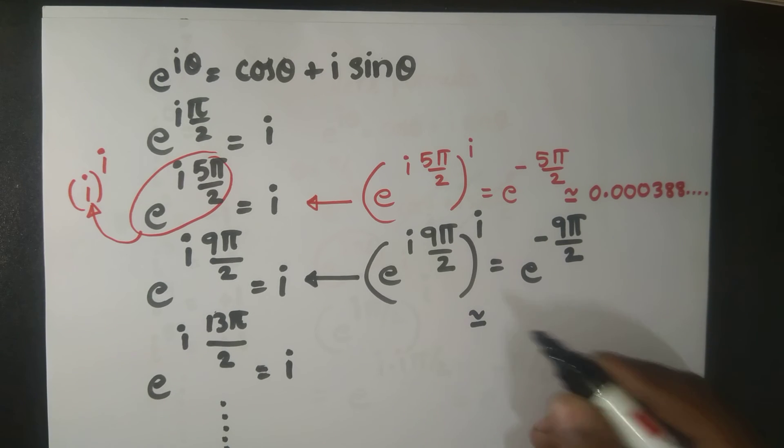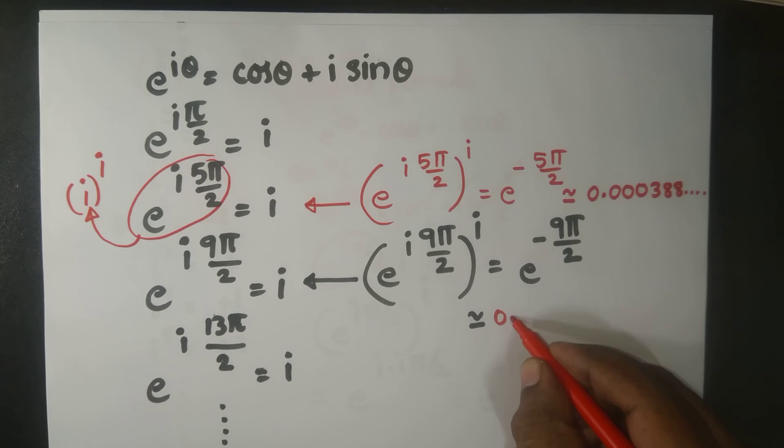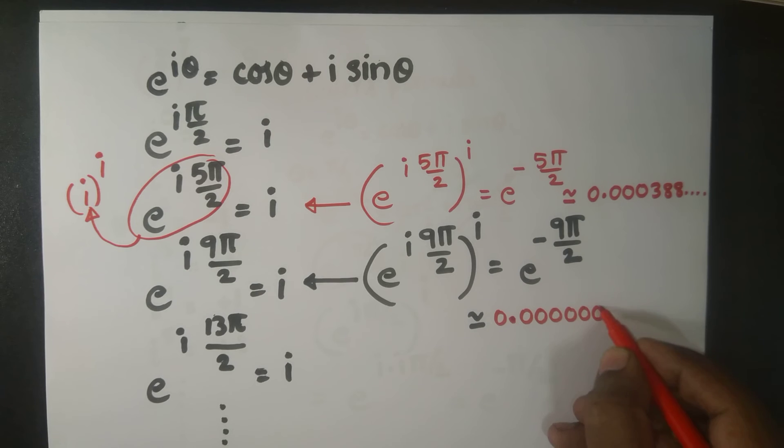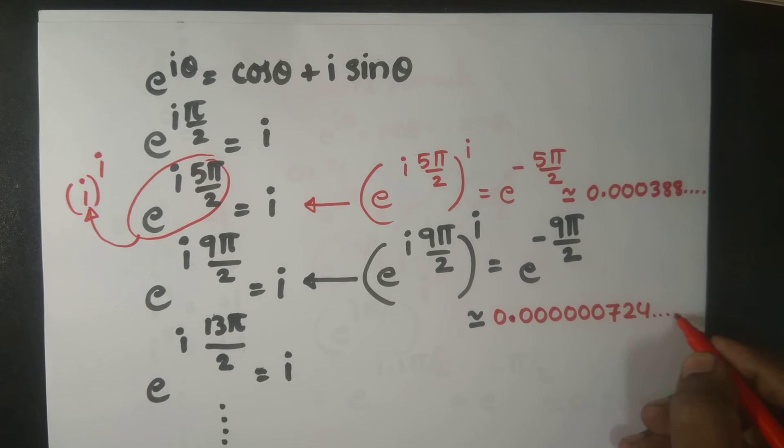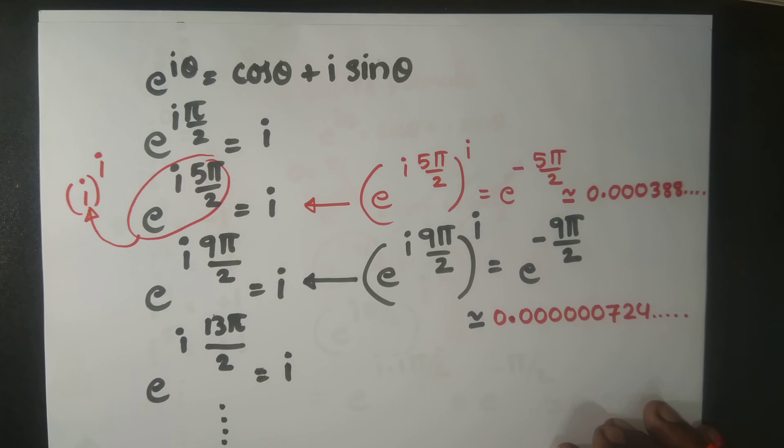Now this would be approximately equal to, after the decimal point, you have approximately six zeros, then 724 and so on. That means...